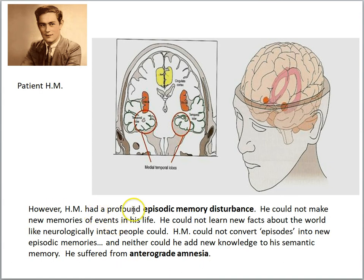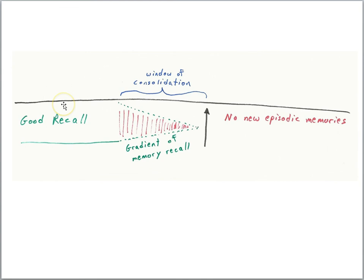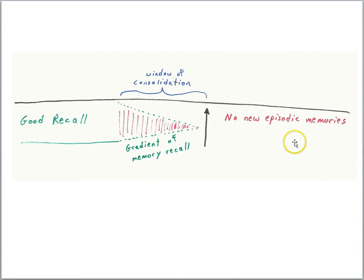However, H.M. did have a profound episodic memory disturbance. He could not make new memories of events in his life, and he could not learn new facts about the world the way neurologically intact people could. H.M. could not convert episodes into new episodic memories, and neither could he add new knowledge to his semantic memory. He suffered from anterograde amnesia. Using a timeline, the arrow indicates when he had surgery — after that point he was unable to make new episodic memories, and because episodic memories provide the content for semantic memory, he could not learn new facts about the world either.